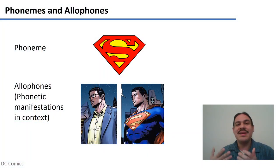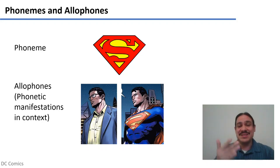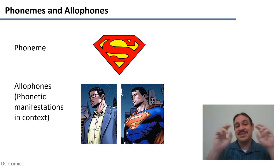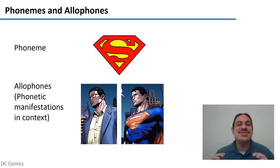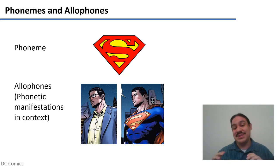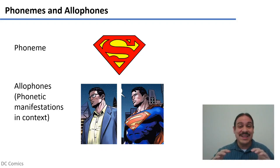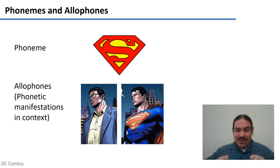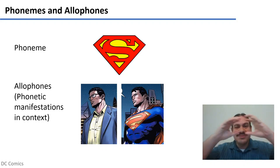We're going to be talking about abstractions of sounds, and what better abstraction than the symbol of Superman. Superman is an abstract concept, and there are context-specific manifestations of Superman. In some contexts he is Clark Kent, for example when he's working at the newspaper. In some other contexts, like when he has to save the city, he is Superman. Both of these are contextual manifestations of the same underlying reality of Superman.